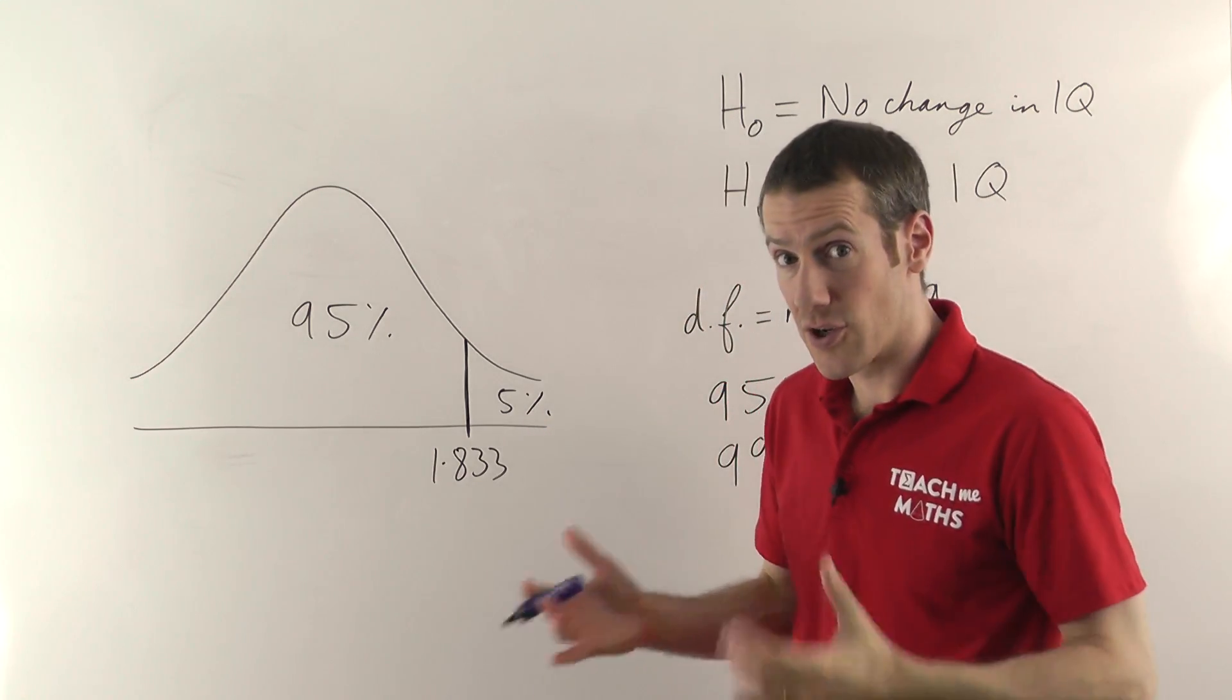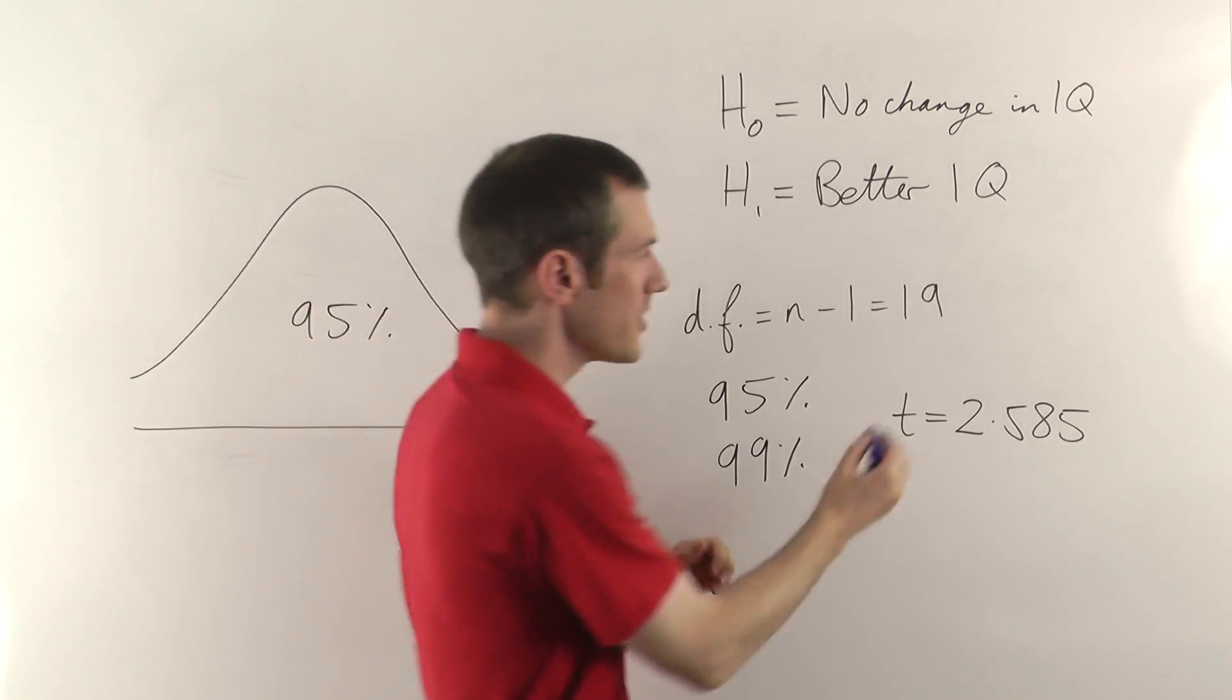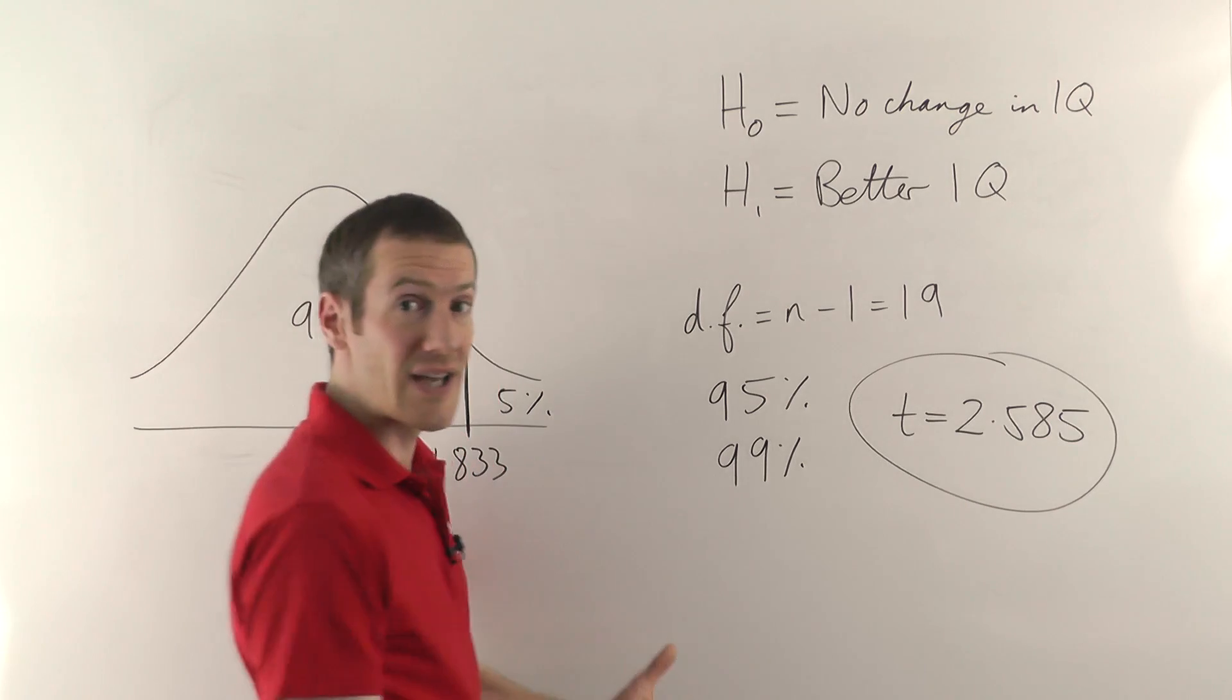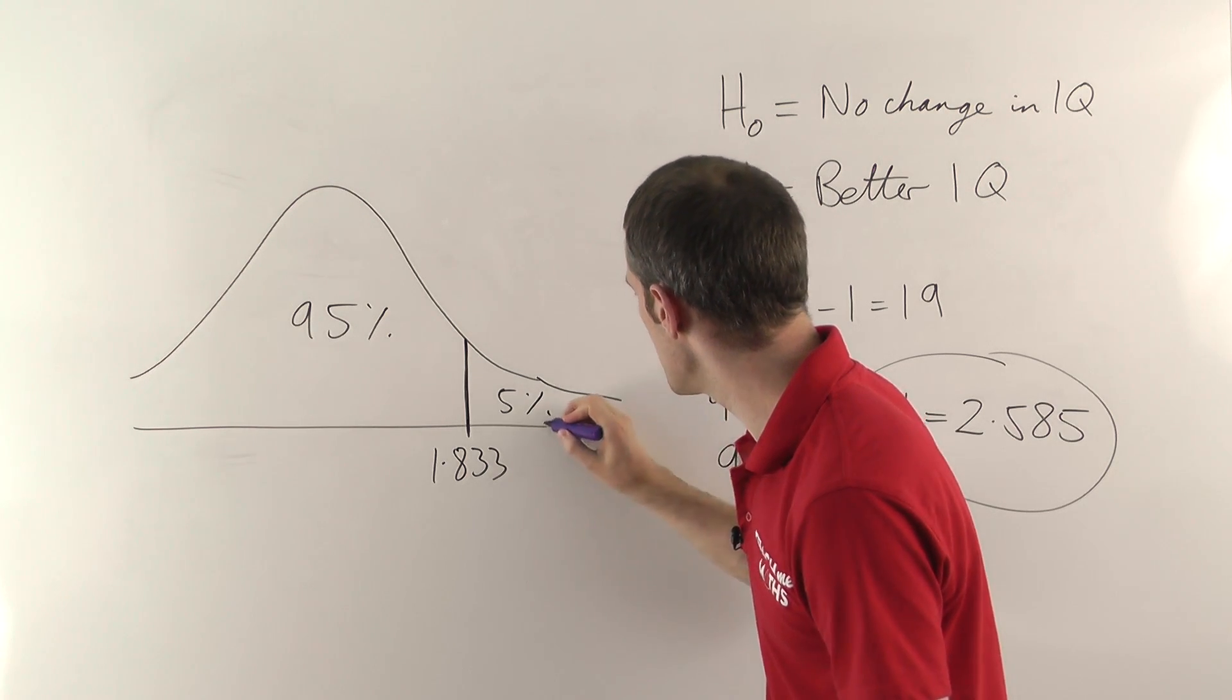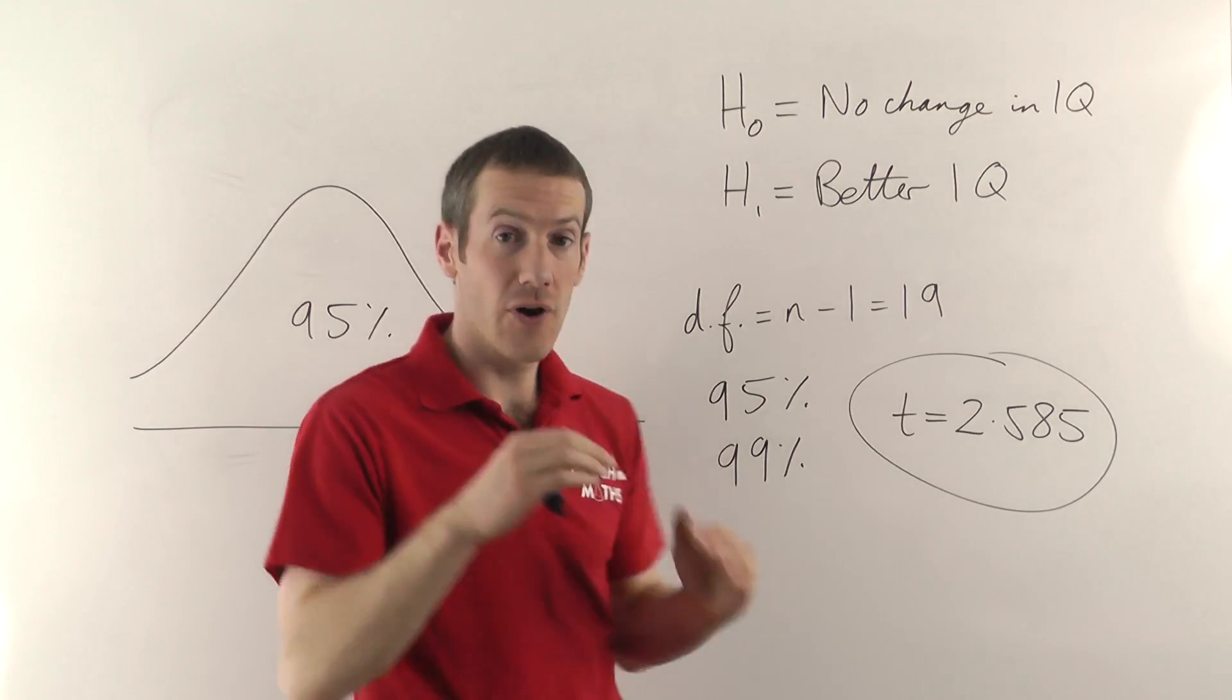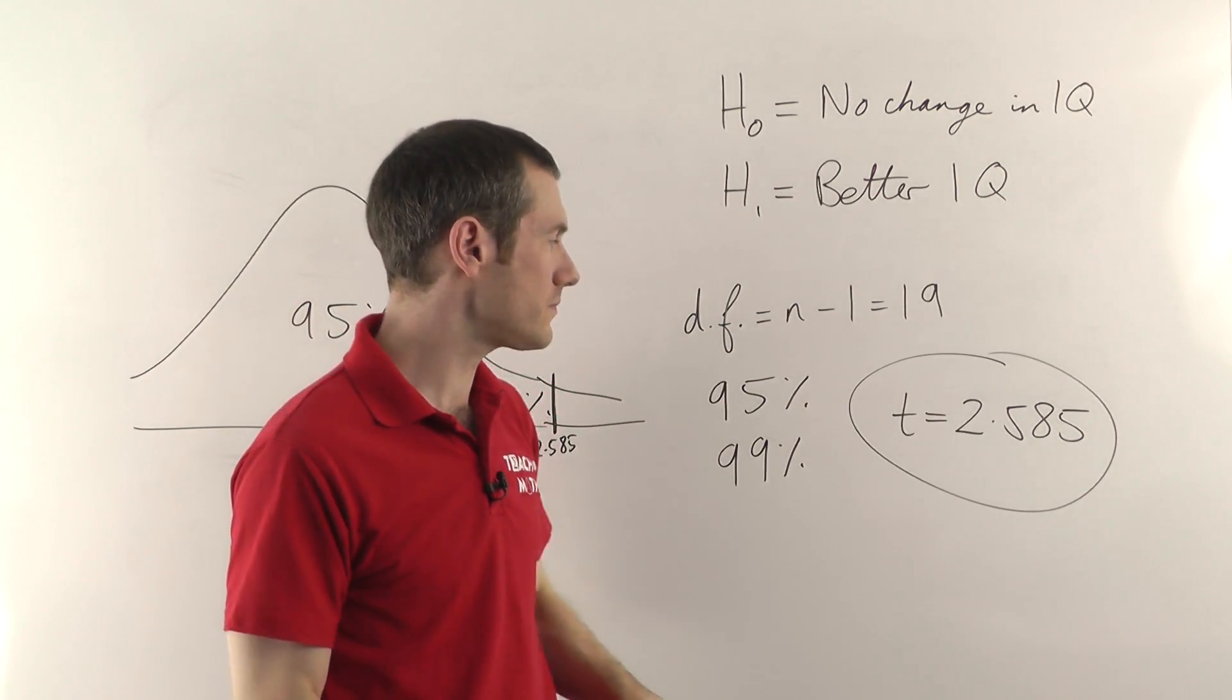So what you want to do, to make a conclusion here, to either reject the null hypothesis and say yes there's a better IQ, or stick with the null hypothesis - to make a conclusion, you have to compare your T value, which was 2.585 that we calculated, with the critical value at the 95% level. Now you can see, the T value we calculated is more than 1.833. That means there's less than 5% chance that they could have got this difference between the means by chance. So that's pretty good. That means we're fairly confident that this wonder drug is actually working, and that we can accept the better IQ.